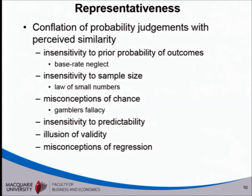Of course, you could affect performance — a severe enough reprimand could shatter someone's confidence so they go completely to pieces. But you'd expect the underlying pattern to be there: a good performance could easily be followed by a bad one, and a bad one by a good one. The mistake is to associate the action taken with the outcome, ignoring the underlying natural variability. It's a bit of a human tragedy that this misconception of regression — a misunderstanding of how probabilistic processes work — can lead to the conclusion that the only way to motivate people is to punish them for mistakes.